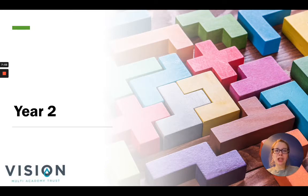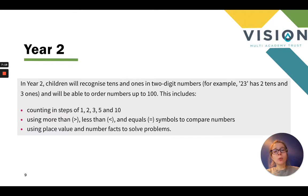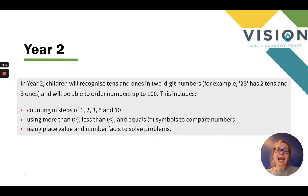So let's have a look at year two. In year two, children will now start recognising the tens and ones in two-digit numbers. For example, 23 has two tens and three ones. They'll also be able to order numbers up to 100 — whereas in year one it was recognising numbers up to 100, in year two children are expected to order them correctly. It also includes counting in steps of one, two, three, five and ten, using more than, less than and equal symbols to compare numbers, and using place value and number facts to solve problems.